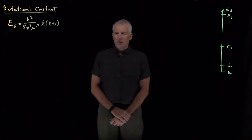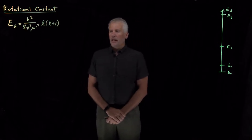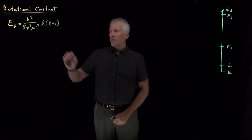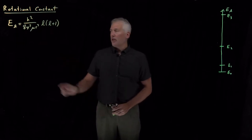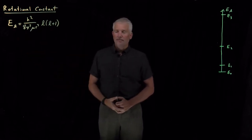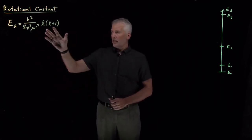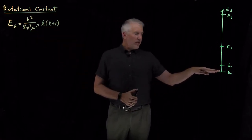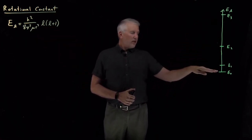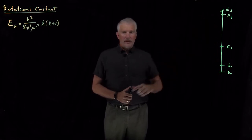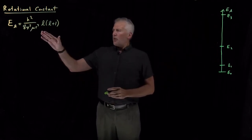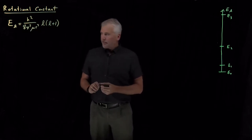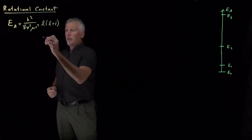The energy levels for a rigid rotor model are given by this expression. They depend on the quantum number L, and this formula can be used. We've calculated energy levels for the first few of these levels, and they get further and further apart as they go up. What we'll do now is take a closer look at this expression and point out a few things.